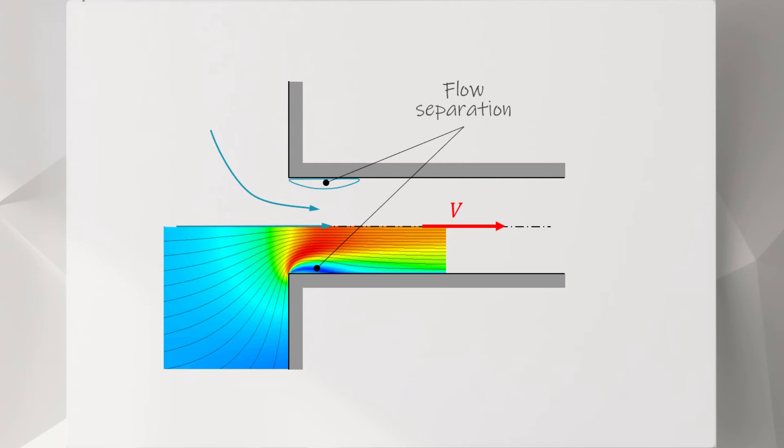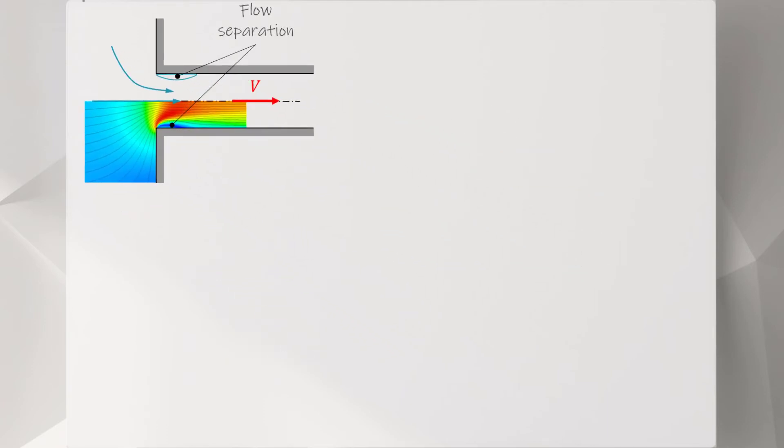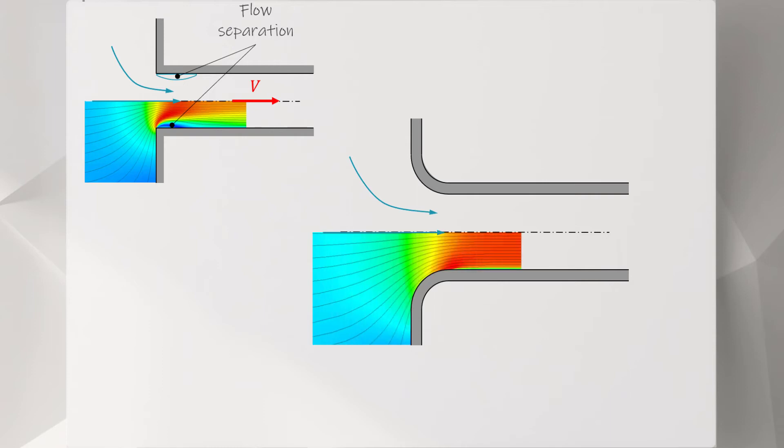This minor loss can be reduced if we smooth out the corners. In this case, we can see that the fluid will present smoother streamlines and it will enter the pipe without generating any flow separation, reducing the pressure loss.